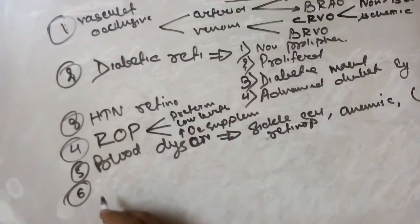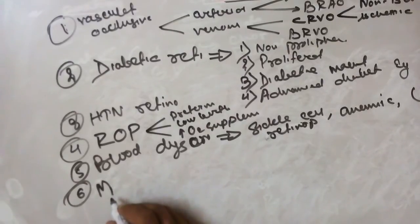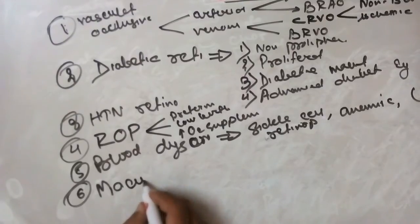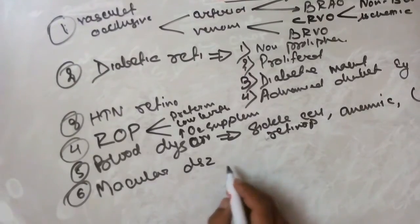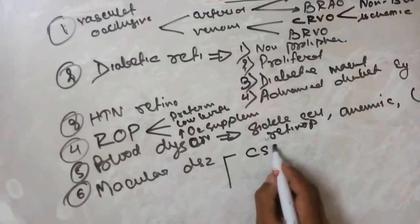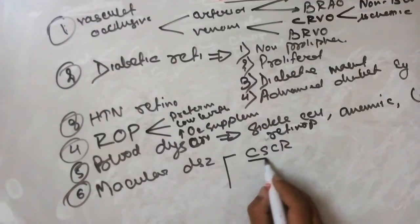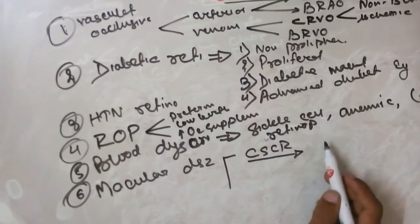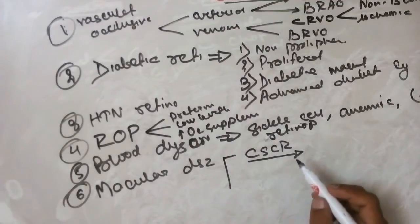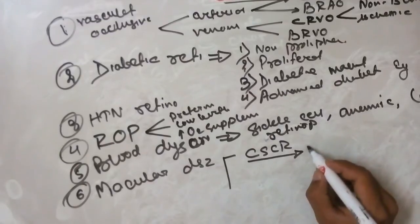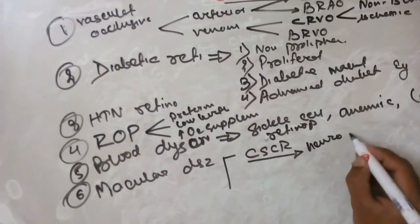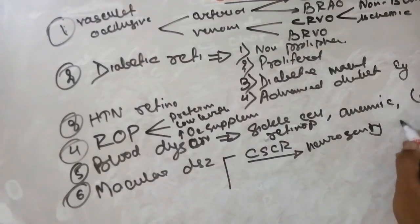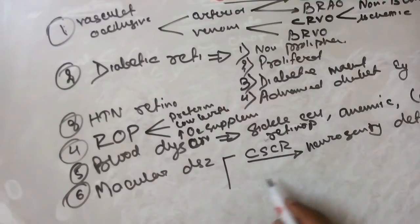The macular diseases we will study include Central Serous Chorioretinopathy (CSR), which involves detachment of the neurosensory part of the retina with or without detachment of the pigmentary part. This neurosensory part detachment is known as Central Serous Chorioretinopathy and is usually seen in the macula. Another related macular disease is Cystoid Macular Edema (CME) — this is the separation of the two layers: the inner plexiform and outer nuclear layers. If edema causing separation occurs between these layers, that is known as CME.